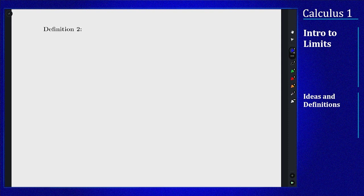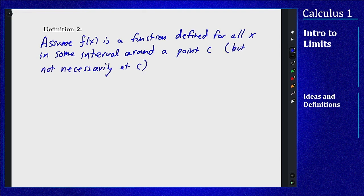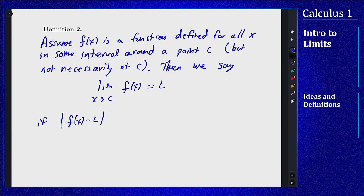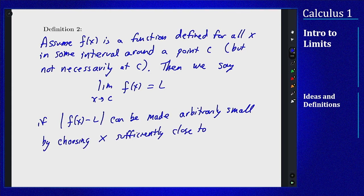Start with our assumption here. We want our function f to make sure it's defined on an interval around the point c but not necessarily at the actual value of c. So assume that f of x is a function defined on some interval around a point c but not necessarily at c. If c could be undefined I don't really care, this definition will still work. Then we say our result: limit x approaches c of f of x equals L if the gap between f of x and L, so absolute value f of x minus L, can be made arbitrarily small by choosing x sufficiently close to c. Caveat, but not equal to c.